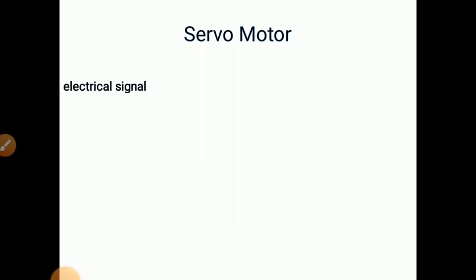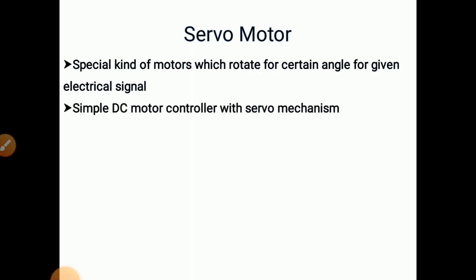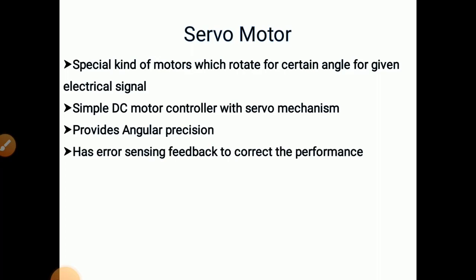Now we will study the servo motor. It is a special kind of motor which rotates for a certain angle for a given electrical signal. It is a simple DC motor controller with a servo mechanism, so a controller is used. It provides angular precision — if we set it for 20 degrees, it will give exactly 20 degrees. It has error-sensing feedback to correct performance. Applications include toy cars and CD players.